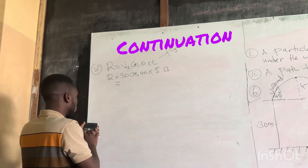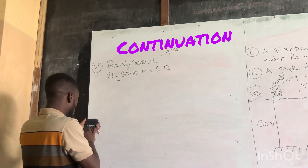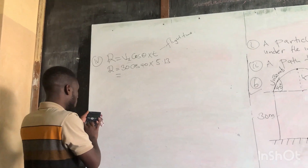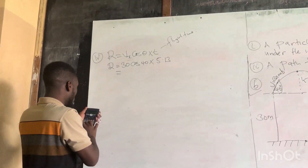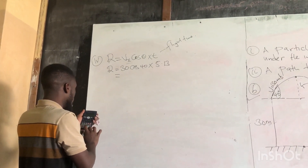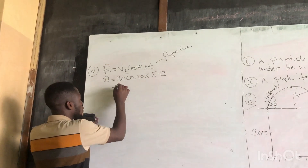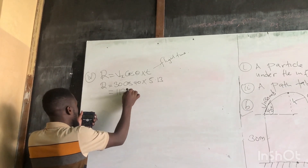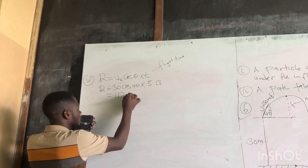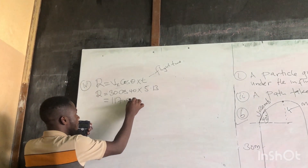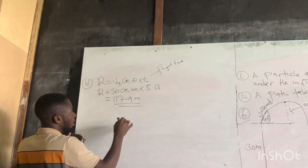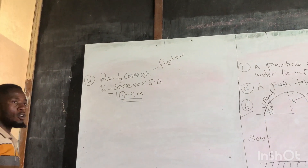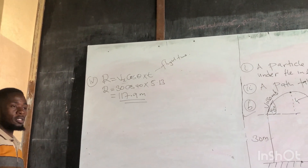It costs 40 multiplied by 5.13, so the answer equals 117.9 meters. So we are done with the range. This is how you find the horizontal distance, which is the range.